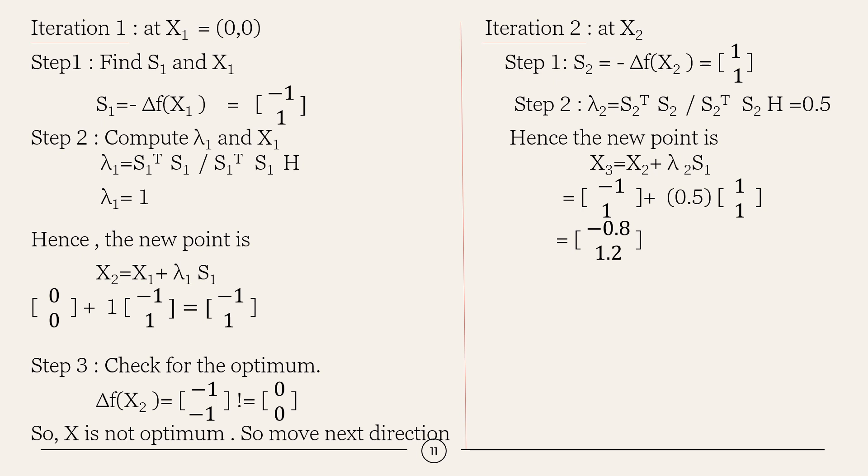Check for optimality. So, if we put the new point in the gradient function, then we will be getting minus 1 comma minus 1 which is not equal to 0 comma 0. So, x is not optimum. So, move to the next direction.